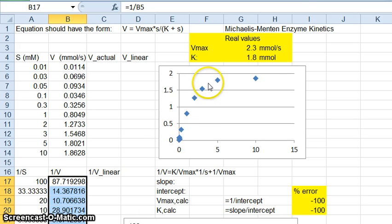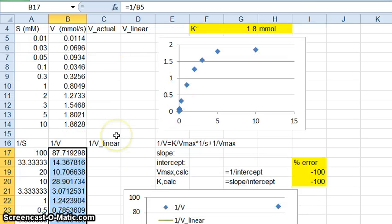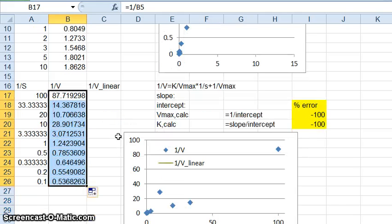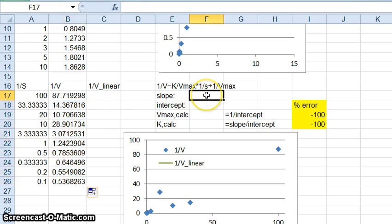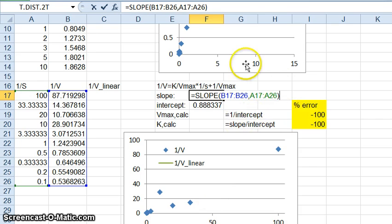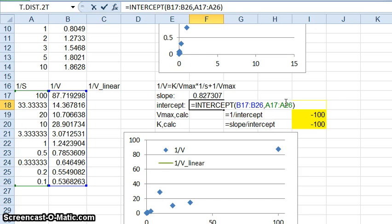What you see is that this is what the data really look like, and as we scroll down this is what the data look like when they are put into this linear form. Now what I'm going to do is I'm going to use the function slope and intercept as we did before to get the values of the slope and the intercept of this linear relationship.